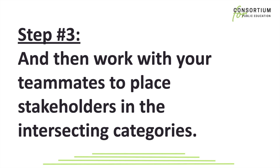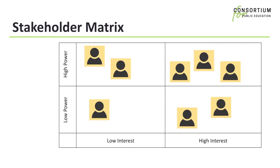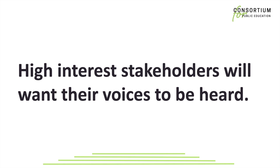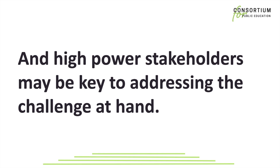Step 3: Work with your teammates to place stakeholders or stakeholder groups in the intersecting categories. You will want to place each stakeholder according to their interest and influence over the topic or challenge that you are trying to solve. Here, we have added stakeholders to each of the four boxes. However, it's the stakeholders in the high interest column that will be our priority. In cases where you are really short on time and/or resources, you may only be able to speak with stakeholders who are both high power and high interest. Nevertheless, keep in mind that high interest stakeholders will always want their voices to be heard, and high power stakeholders may be key to addressing the challenge at hand.